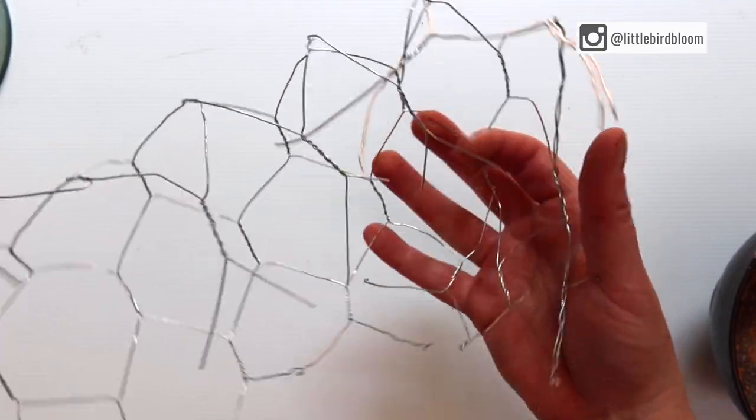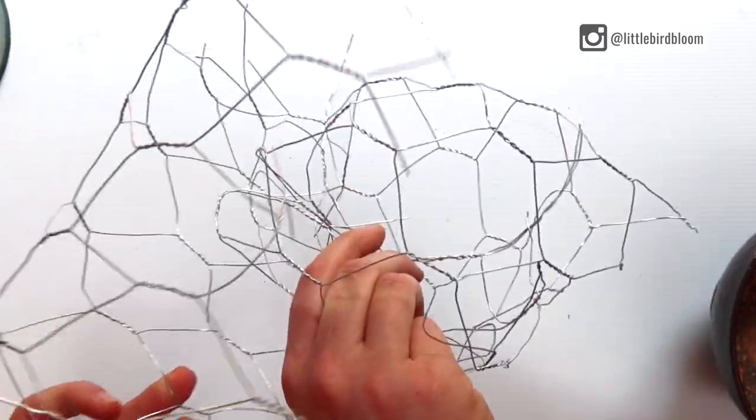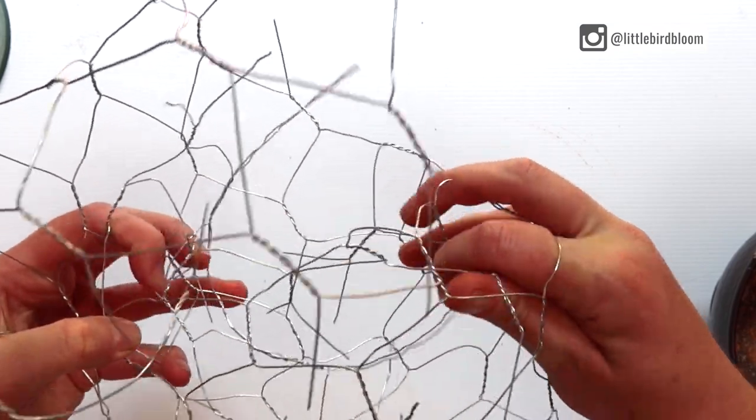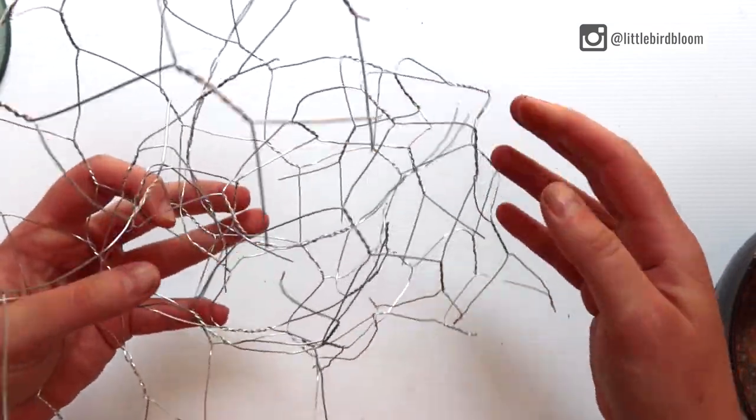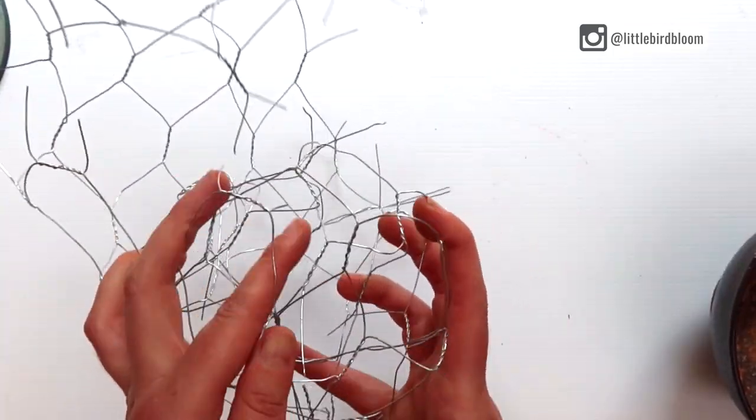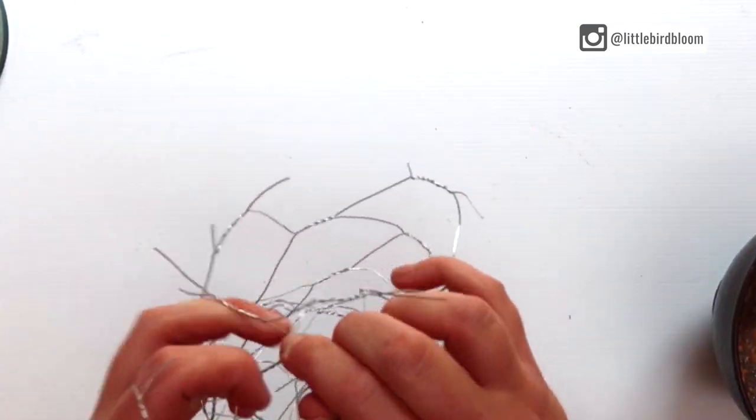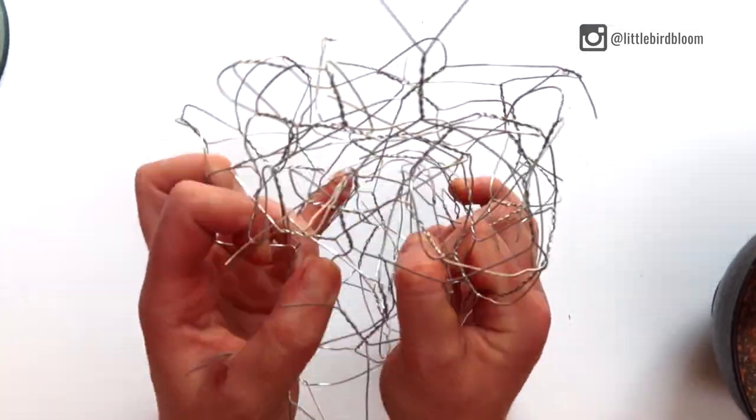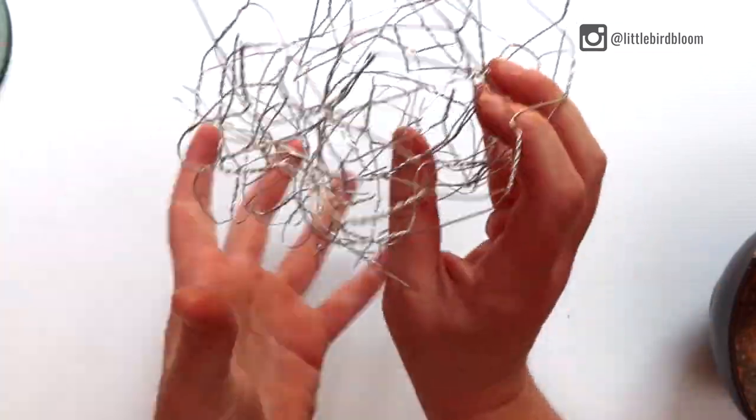And what you're simply going to do is start to roll up your chicken wire so that you are creating a bit of a sphere, but it's really important that it's not too tight and that you actually will have layers on the inside of your nest. So it's not one solid ball of chicken wire, but there are actual layers on the inside. I like to think of it a little bit like a planet.